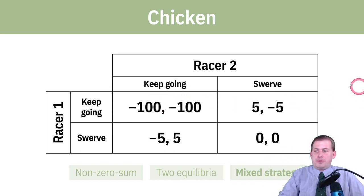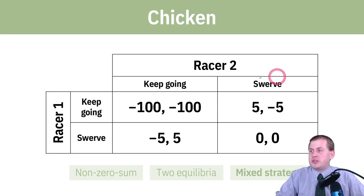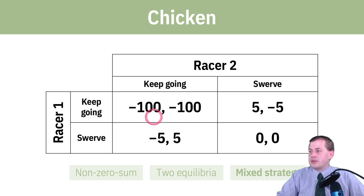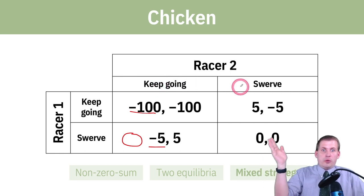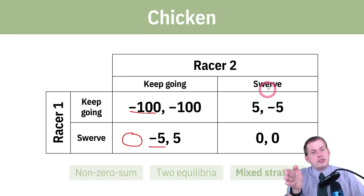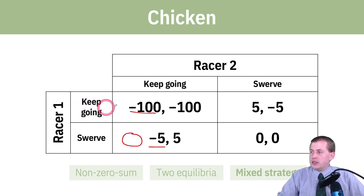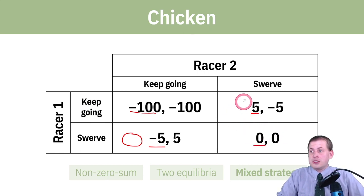To figure out the strategies, we do the same column and row covering-up process. If you're racer one, ignore the swerve column and ask: racer two is definitely going to keep going — what should I do? If you know racer two is going to keep going, keeping going gives you negative 100; swerving gives you negative five. So you'll swerve. Then cover up the keep-going column: you know racer two is definitely going to swerve. If you keep going you get five points; if you swerve you get zero. So you should keep going.